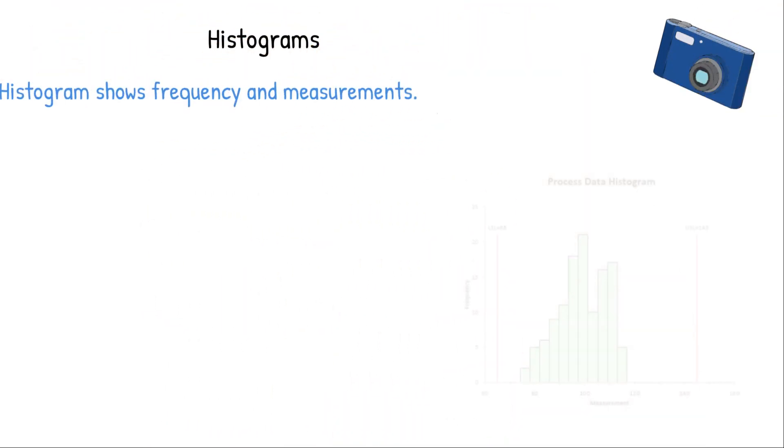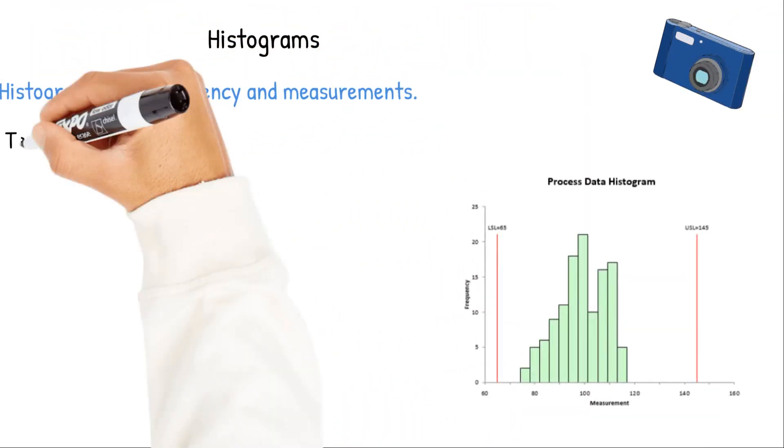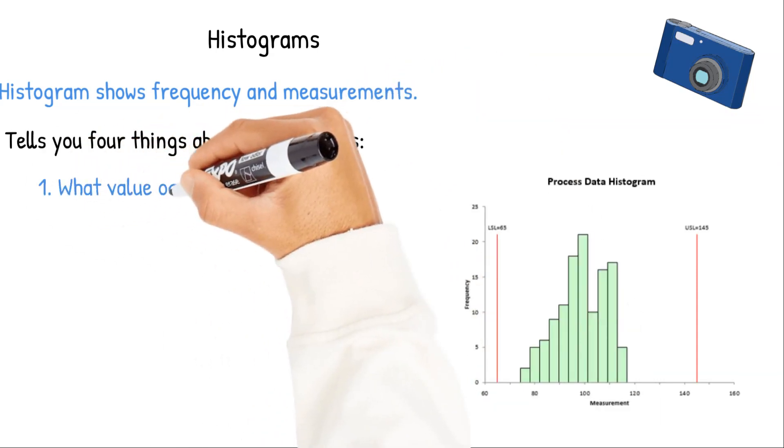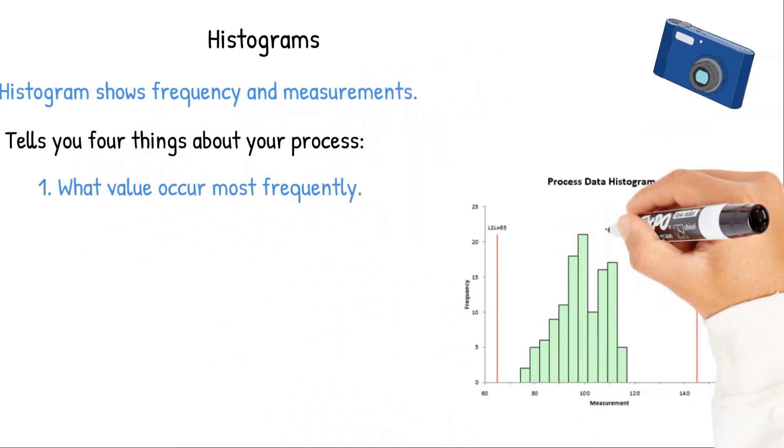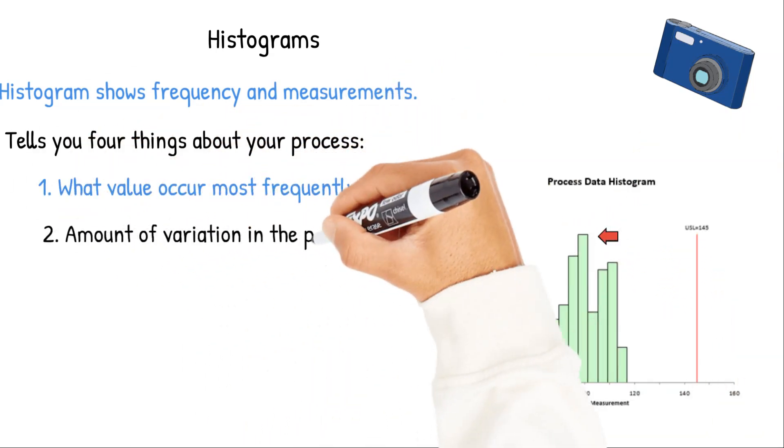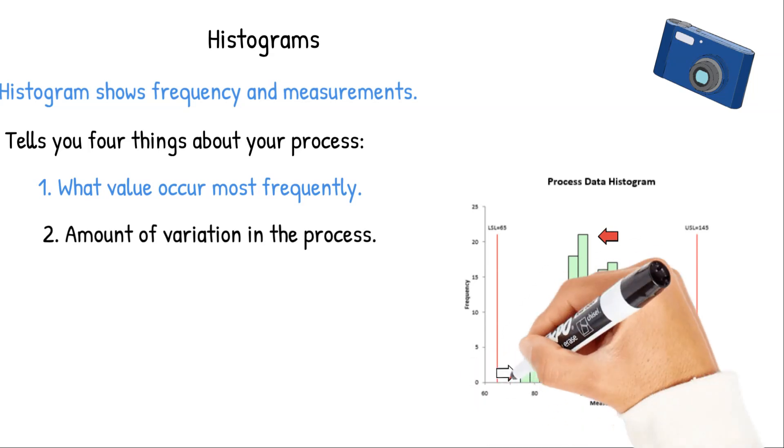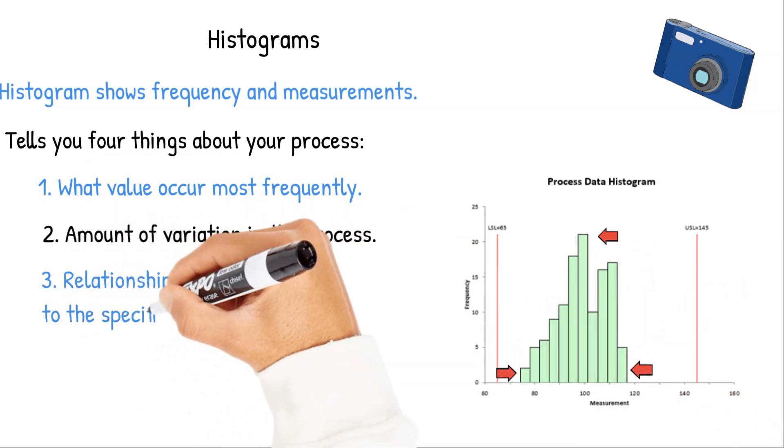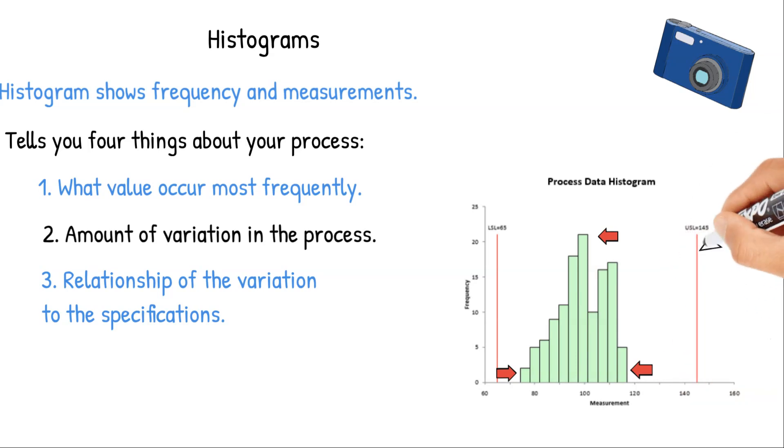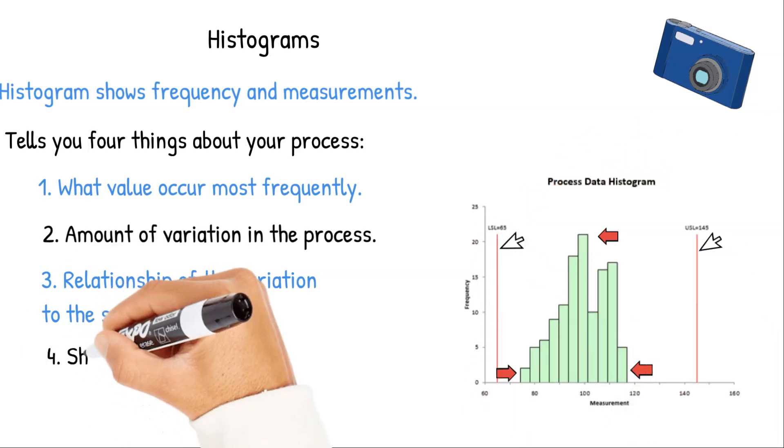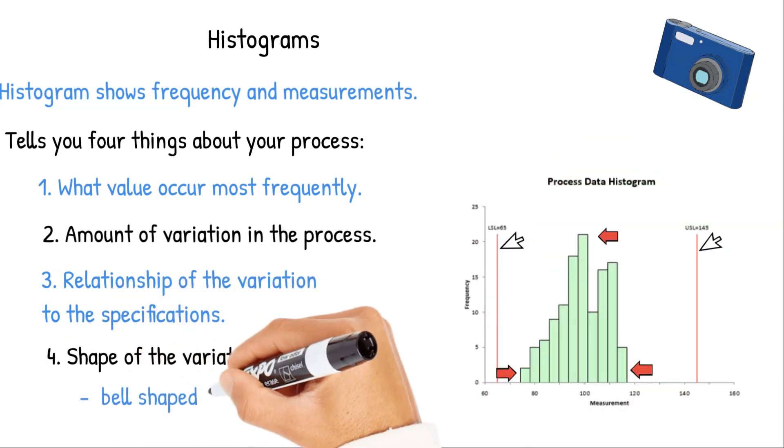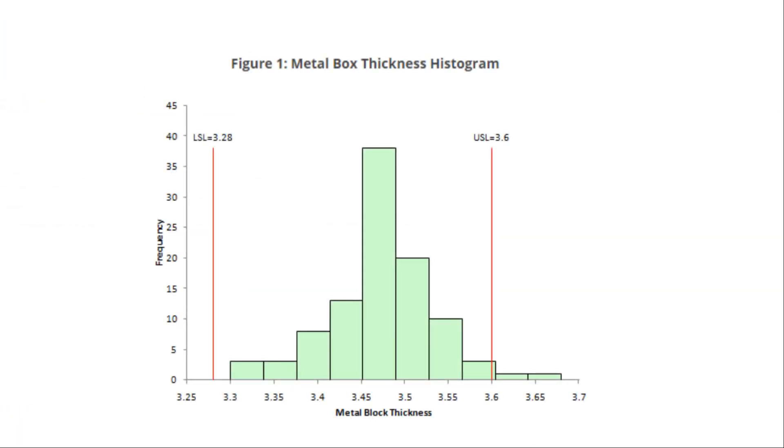So we're going to start with histograms. A histogram shows the frequency of measurements over a time period and it tells you four major things about your process: what value occurs most frequently, how much variation is there in the process, the relationship of the variation to the specifications and if you have anything that's out of spec, and the shape of the variation. Is it bell shaped or is it skewed?